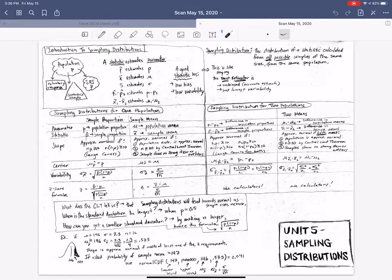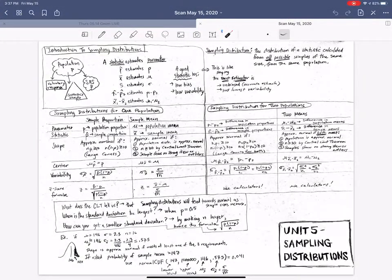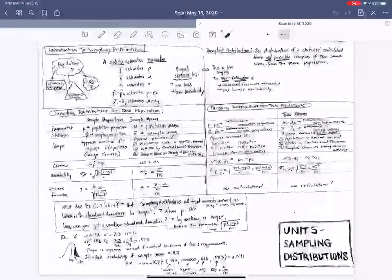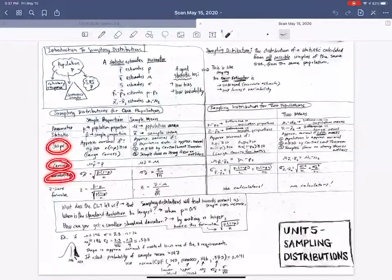Hi guys, I am going to explain unit 5 sampling distribution. So let's take a look. In our 5th unit, it has to do with sampling data and the distribution of that. So it should come as no surprise that we're going to talk about where is the center, the shape, and the spread.